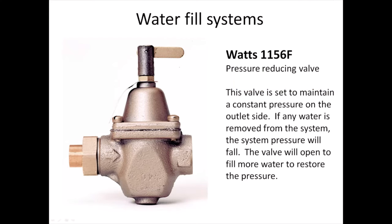Typically, household pressure in the pipes is going to be somewhere in the 50 to 60 PSI neighborhood. The pressure in your boiler system is going to be quite a bit less than that, so there needs to be some way to reduce the pressure from normal domestic water pressure down to boiler water pressure. The pressure reducing valve has that job. The valve is set to maintain a constant pressure on its outlet side. If any water is removed from the system, the system pressure falls, and the valve responds by opening a little bit to fill more water and restore that pressure. When pressure is back to the set point, it stops filling.